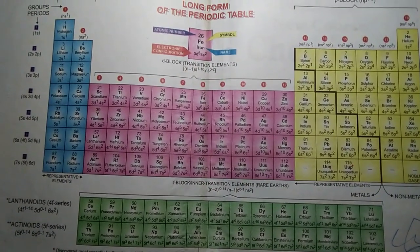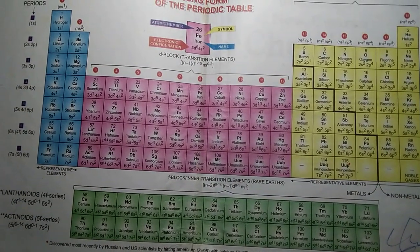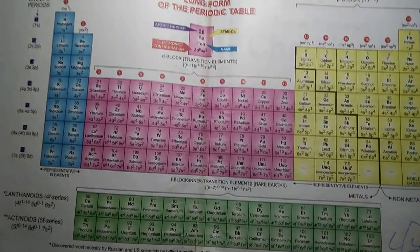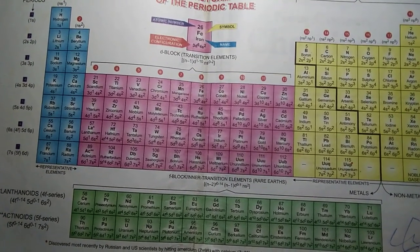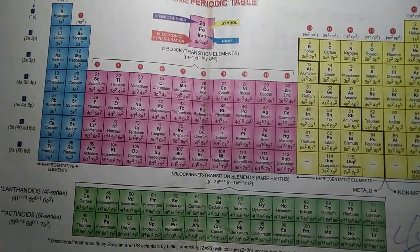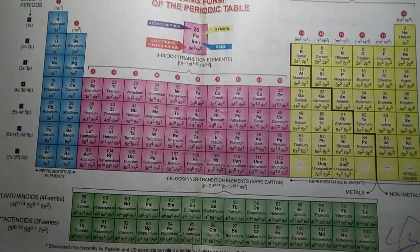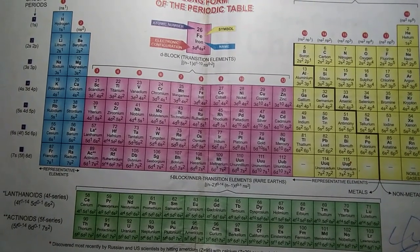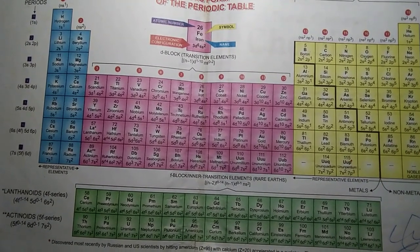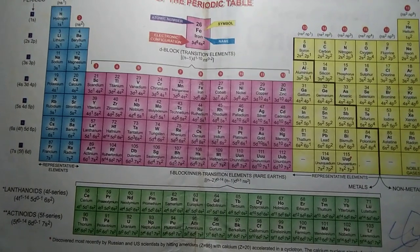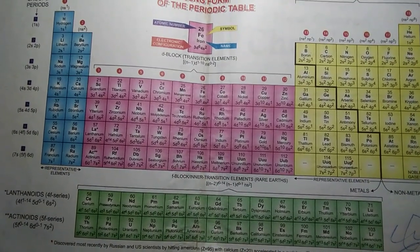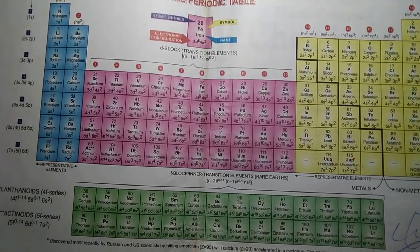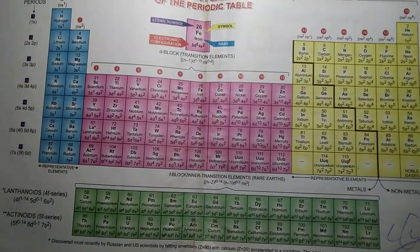For group 15, you can use: 'nana patekar asrani sab bikhenge' — nana for nitrogen, patekar for phosphorus, asrani for arsenic, sab for antimony, and bikhenge for bismuth. You can easily remember it this way.